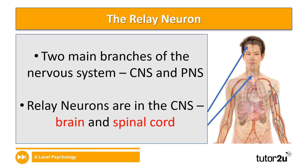We're going to begin with the relay neuron. Remember there are two main branches of the nervous system: the CNS, the central nervous system, and the PNS, the peripheral nervous system. In terms of where relay neurons are, they're located in the CNS — the central nervous system — specifically the brain and the spinal cord.